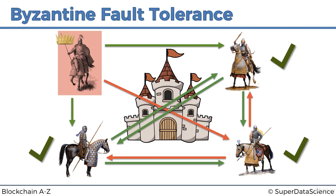The question is: to what level is it tolerant? What if there were two traitors in the army? With two traitors, there's no way they would succeed — the problem has no solution. What was proved in the paper is that for this algorithm to work, you can have no more than 33 percent traitors. If you have 10 generals and four are traitors, you lose; if only three are traitors, the algorithm works.